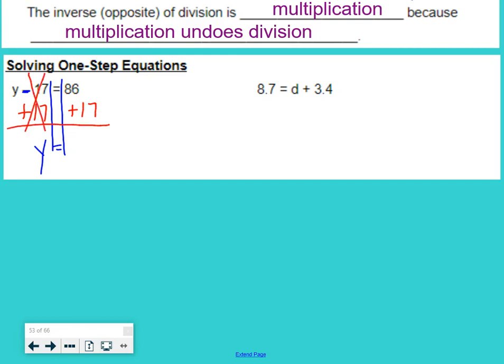Minus 17 plus 17, they make 0. They undo each other. We're left with y equals 86 plus 17, which ends up being 103. So y equals 103.